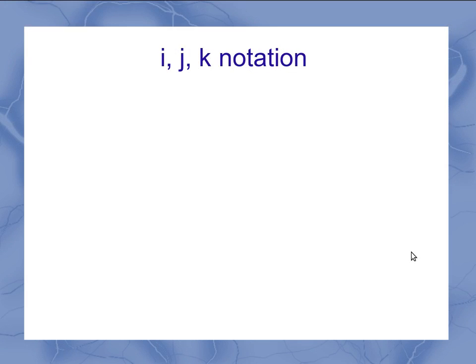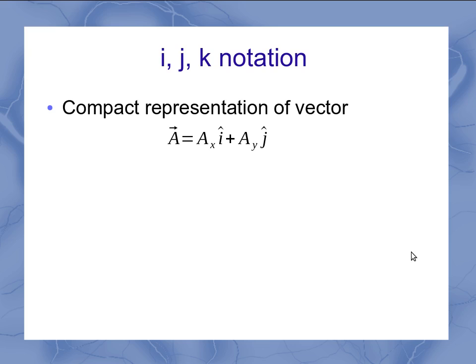Now another way that you're going to see, and we're going to have to explain this in more detail, is the ijk notation. And this is really just a compact representation of a vector. If I've got this vector a and I've got the components ax and ay, it might be convenient to be able to represent them in an equation to be able to do the math a little bit easier. And that's really what this ijk notation is about.